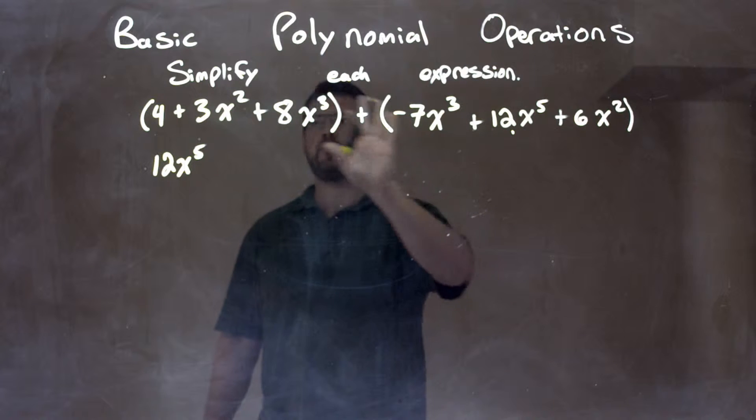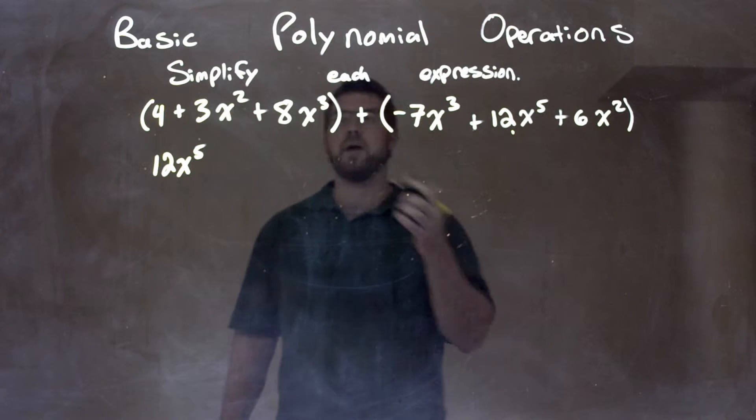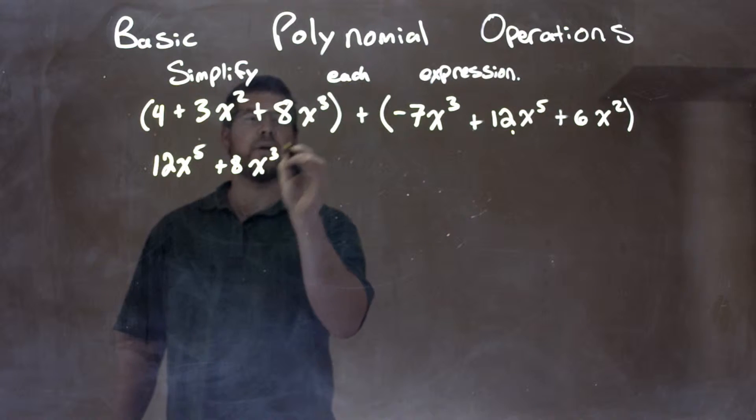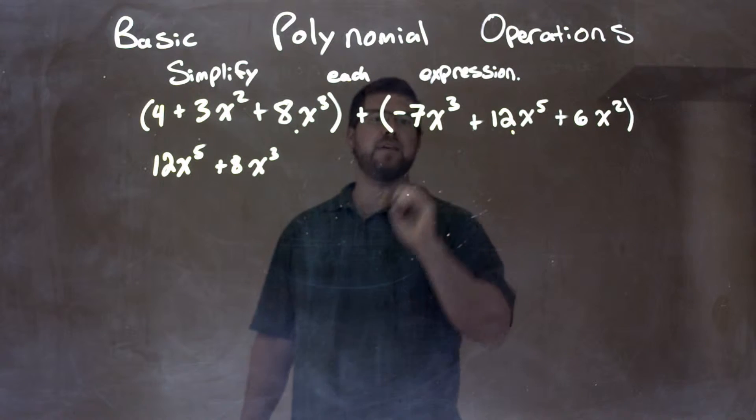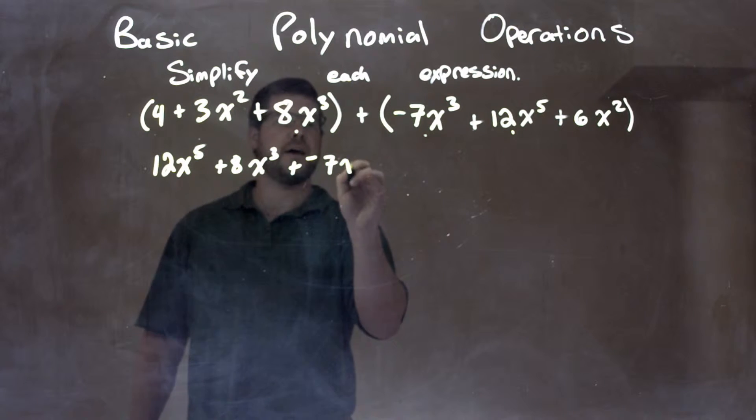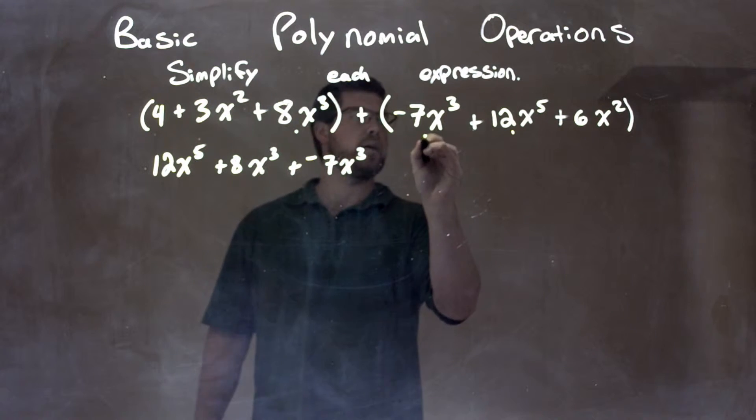Next highest degree, well I don't see anything to the fourth power, but I see to the third power. We have 8x to the third plus 8x to the third right here, and then I have a negative 7x to the third, so plus a negative 7x to the third. Okay, got that done.